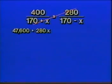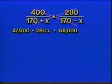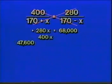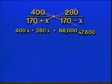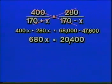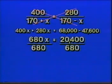Cross-multiplying in one direction gives us 47,600 plus 280X. Cross-multiplying the other way — 400 times (170 minus X) — gives us 68,000 minus 400X. We want constants on one side and variables on the other. Adding 400X on both sides moves the minus 400X to become plus 400X. Subtracting 47,600 on both sides gives minus 47,600 on the right. Collecting on the left gives 680X, and collecting on the right gives 20,400. Dividing both sides by 680, we get a nice cancellation on the left and 30 on the right.